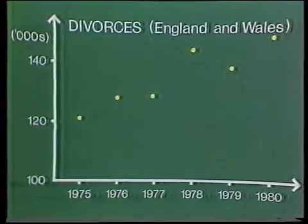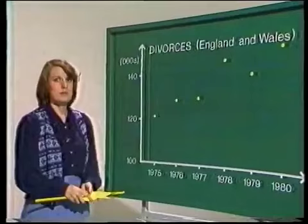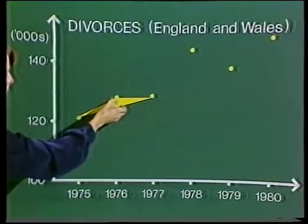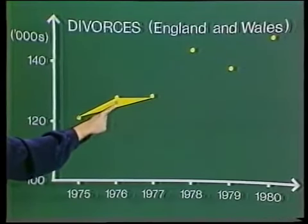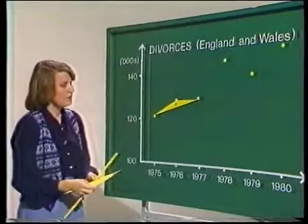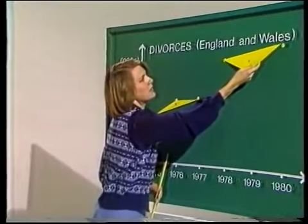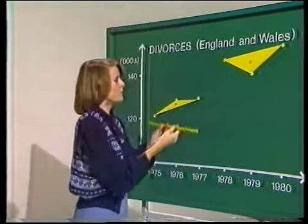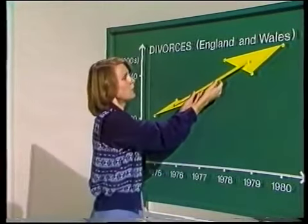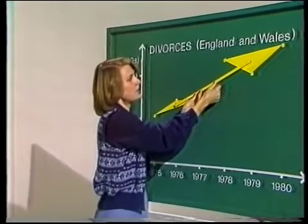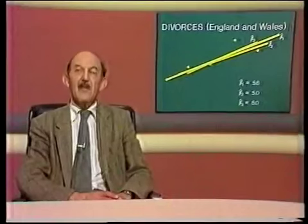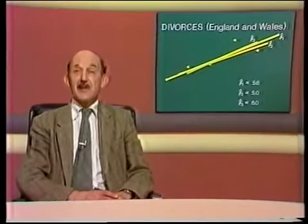But we're still not making use of the middle two points, so let's try a third way. We take the triangle connecting the first three data points and find its centre of gravity. Now we'll take the triangle joining the last three data points and find its centre of gravity. Now, if we join the two centres of gravity with a line, that will give us a third estimate, beta 3 hat, of the slope.